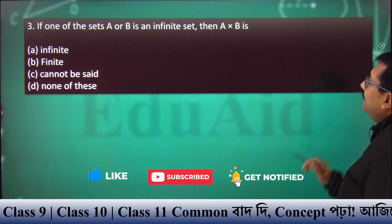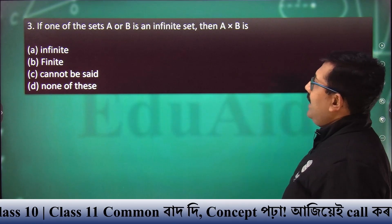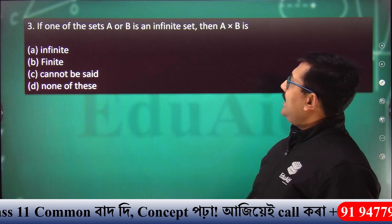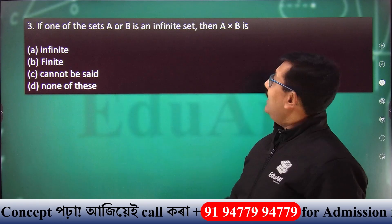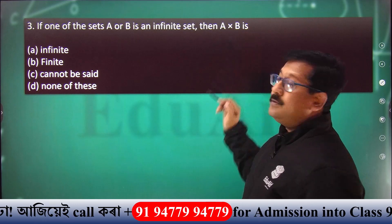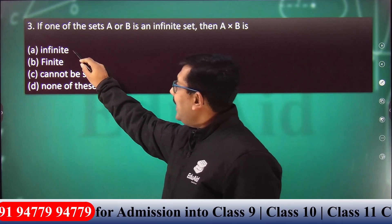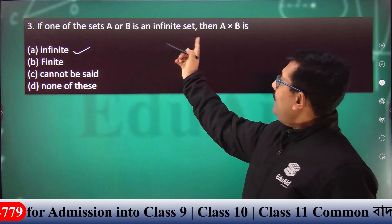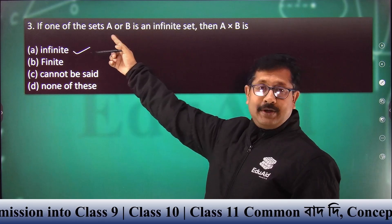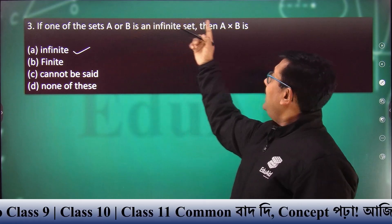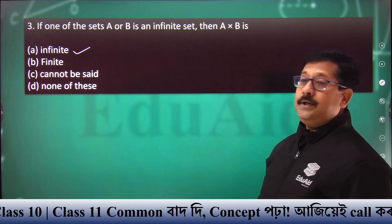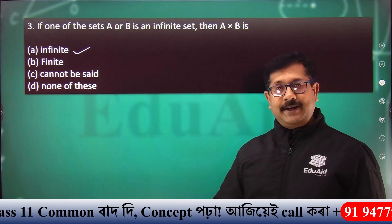Next question: if one of the sets A or B is an infinite set, then A cross B will also be infinite. So ultimately, this is A cross B equal to infinity.